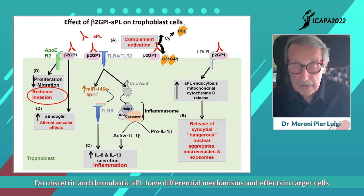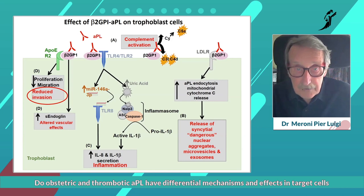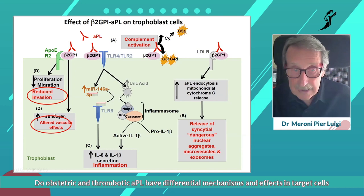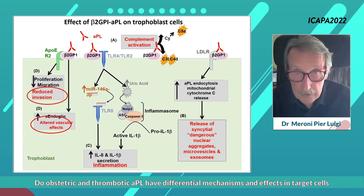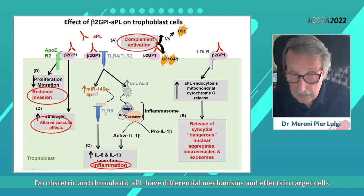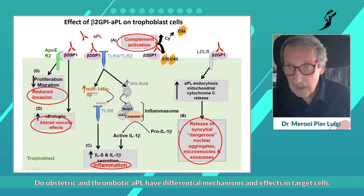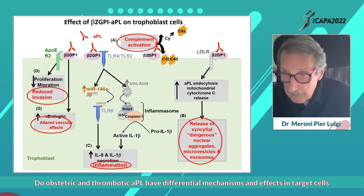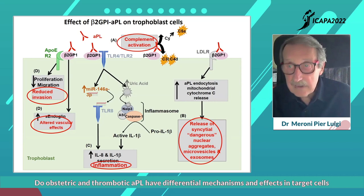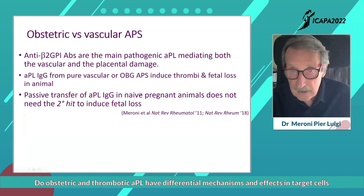The antibodies can affect trophoblast physiology in different ways: they can affect proliferation and migration, alter vascular remodeling, activate complement, induce secretion of inflammatory cytokines, and release dangerous nuclear aggregates such as microvesicles and exosomes from the placenta tissue. So we now understand how the antibodies can damage placenta tissues.